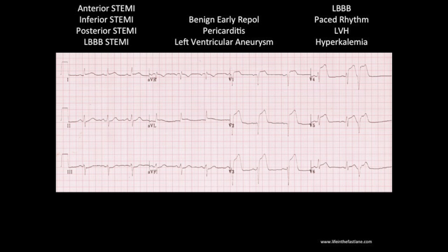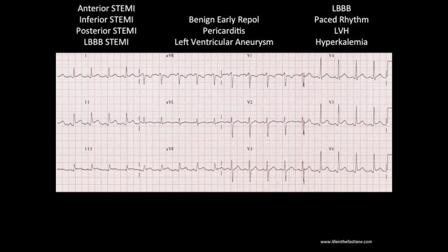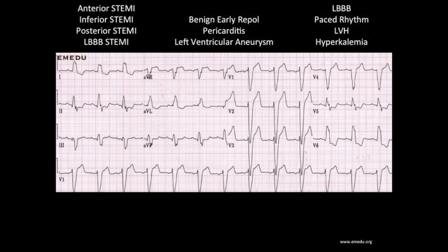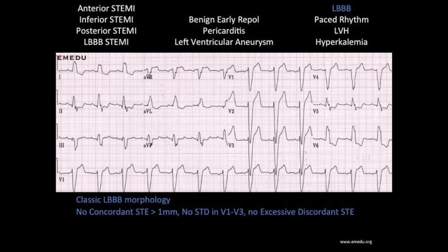Now we're going to do a quick rapid-fire ECG challenge to wrap things up. Each of the following ECGs is either a STEMI or a STEMic. Your options will be on top of the screen — I'll give you a couple seconds to figure each one out. Here's the first ECG. This is actually a true anterior STEMI, where we see ST elevation in V2, V3, V4 with reciprocal changes in V2, V3, and AVF. Here's ECG number 2 — this is an example of pericarditis. We see diffuse ST elevation with PR depression and the Spodick sign, which is the downsloping TP segment. ECG number 3 is a left bundle branch block — classic left bundle morphology with no Sgarbossa criteria to suggest a STEMI.